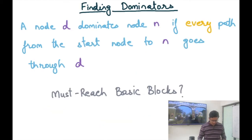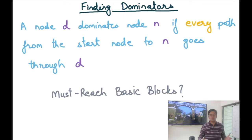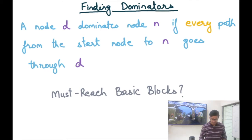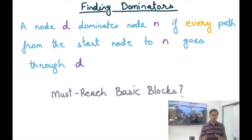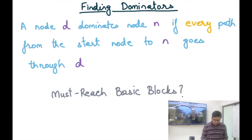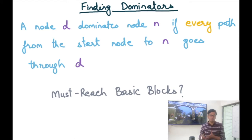So how do I identify the dominators? Recall that a node D dominates node N if every path from the start node to N goes through D. Whenever you see something like 'every path from the start node goes through D,' you should think data flow analysis. We have seen similar analyses in the past — for example, must-reach definitions, where a definition must reach a program point if all possible paths from the start node to that point have that definition and it has not been killed. Similarly, here we have must-reach basic blocks analysis, which is actually simpler: what basic blocks must be on all possible paths from the start node to this program point? That's exactly our dominator analysis.